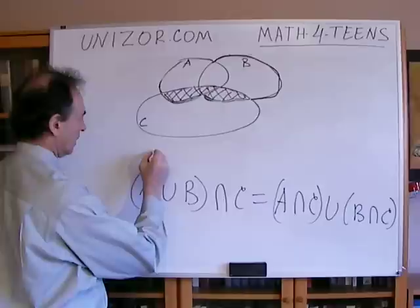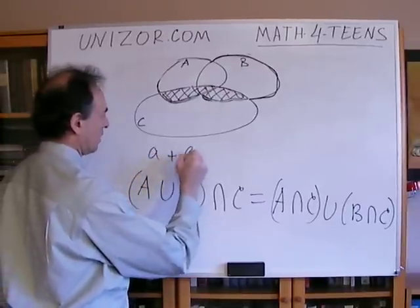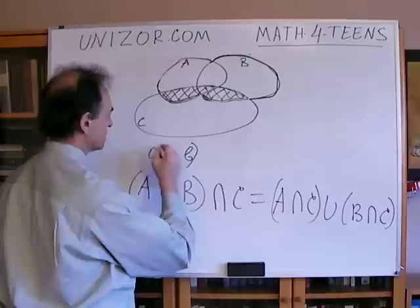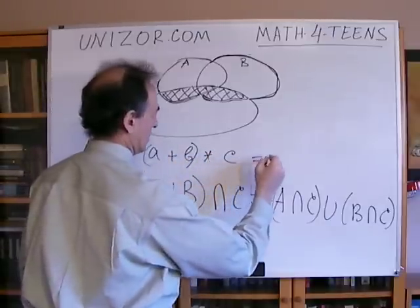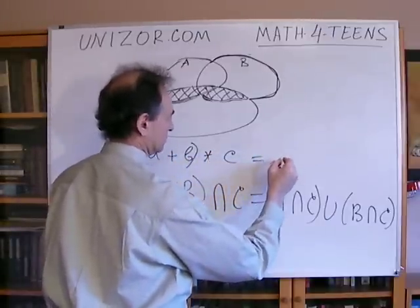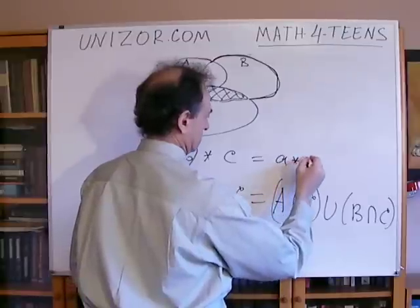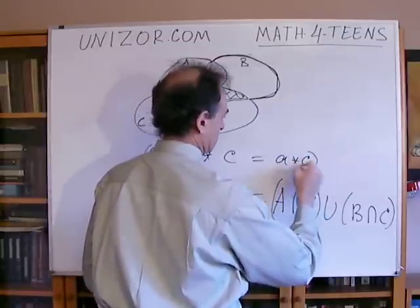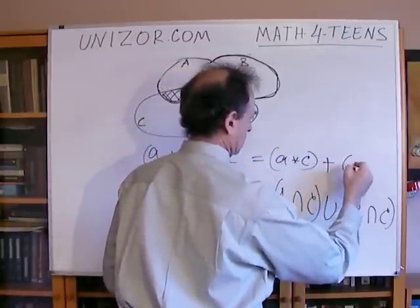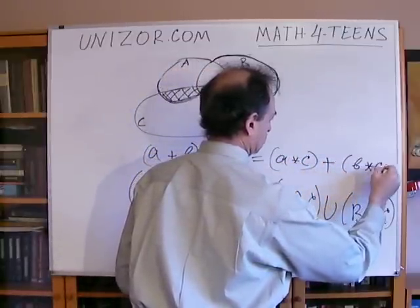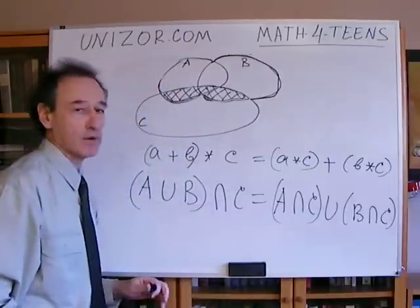Similarly, among numbers you have this distributive law as well. That's why I was saying that union is very much like addition and intersection is very much like multiplication — full similarity.